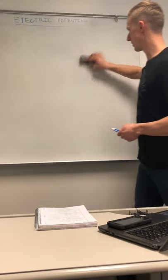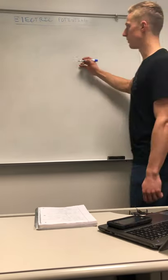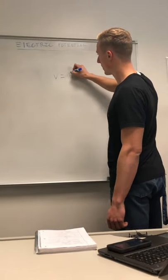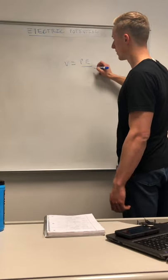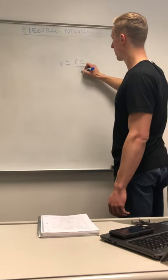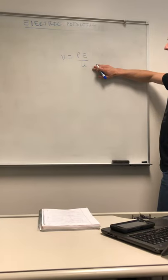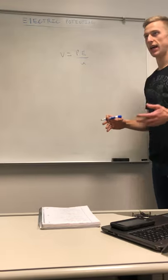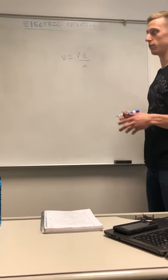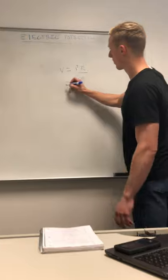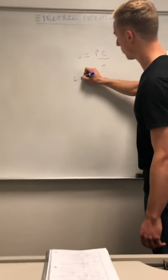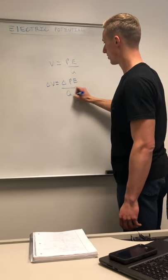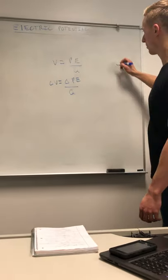Now we'll connect voltage with potential energy. Voltage V equals electric potential energy divided by charge Q. As mentioned before, the change in voltage and change in potential energy are more important than their exact values. From this equation, the change in voltage equals the change in potential energy divided by charge.